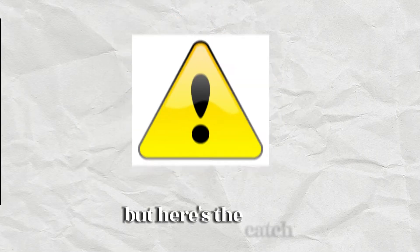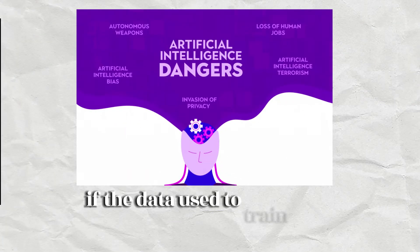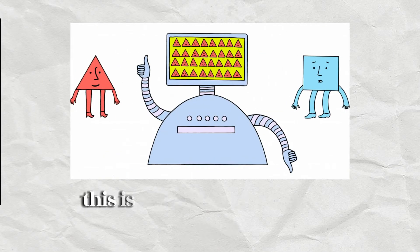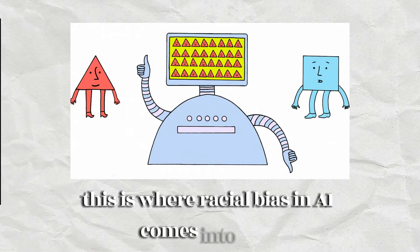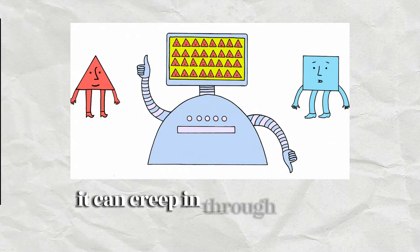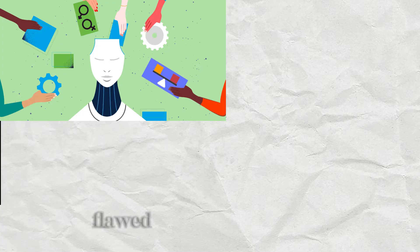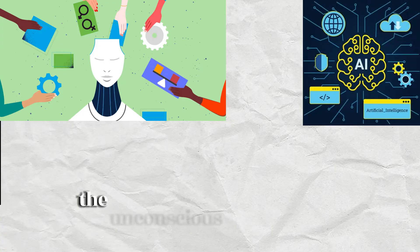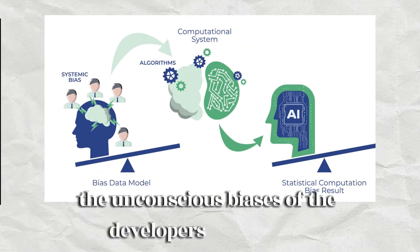But here's the catch. If the data used to train AI is biased, the AI itself can become biased. This is where racial bias in AI comes into play. It can creep in through biased training data, flawed algorithms, or even the unconscious biases of the developers themselves.